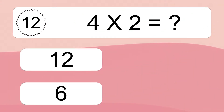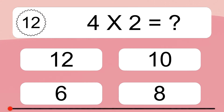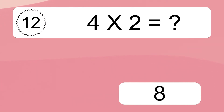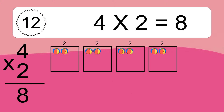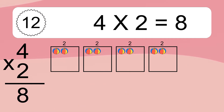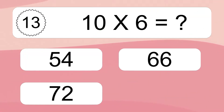4 times 2 equals what? 4 times 2 equals 8. We have 4 boxes, and each box has 2 colorful balls inside. If you count all the balls in all the boxes together, you will have 4 times 2 balls. This equals 8 balls.